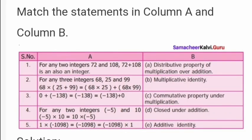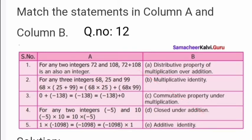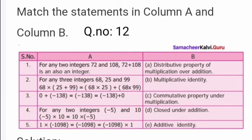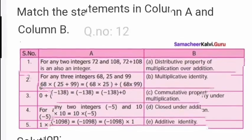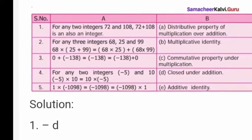Question 12 — match the given statements: Question 12 comes under the closure property of addition. Question 12 also relates to the distributive property of multiplication over addition. Question 13 comes under the property of additive identity. Question 4 comes under the commutative property of multiplication. Question 5 refers to the multiplicative identity. Look at the answer carefully and take it down in your classwork notebook.